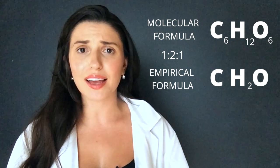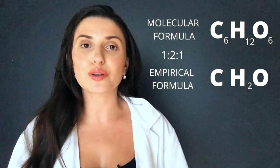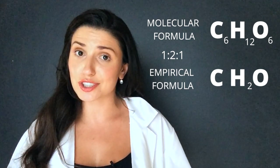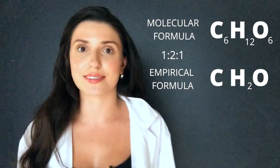However, the empirical formula is not glucose. Glucose has to have six carbons and subsequently it has to have 12 hydrogens and six oxygens to be glucose.